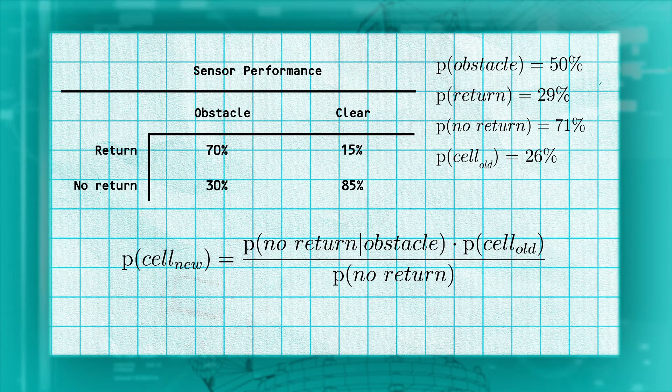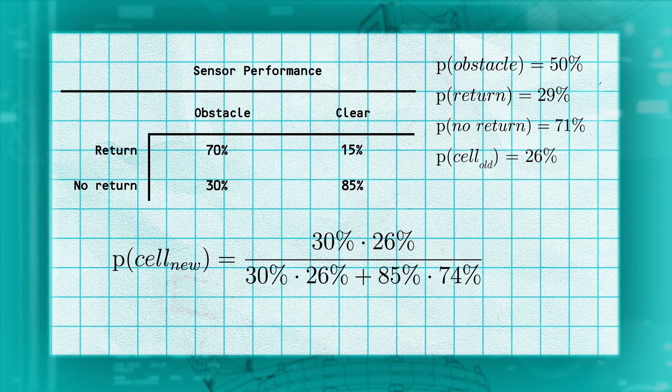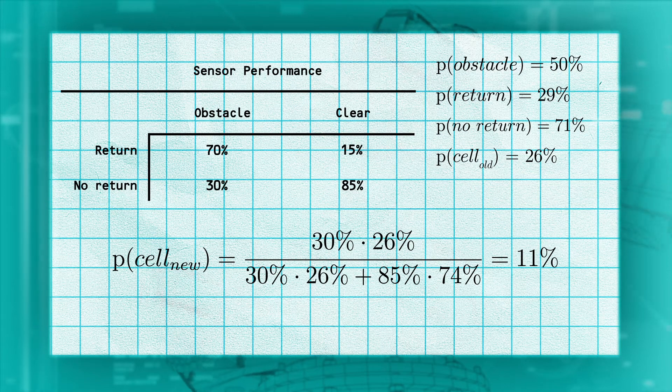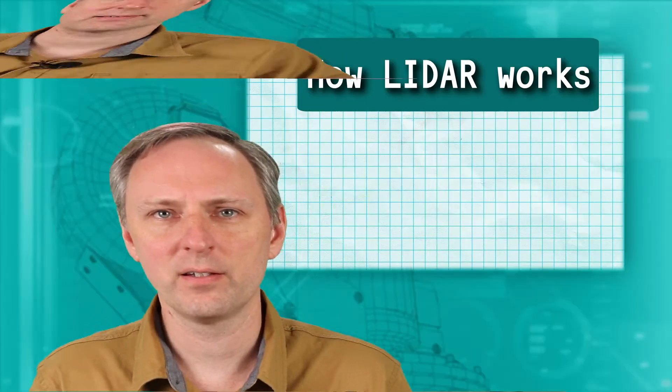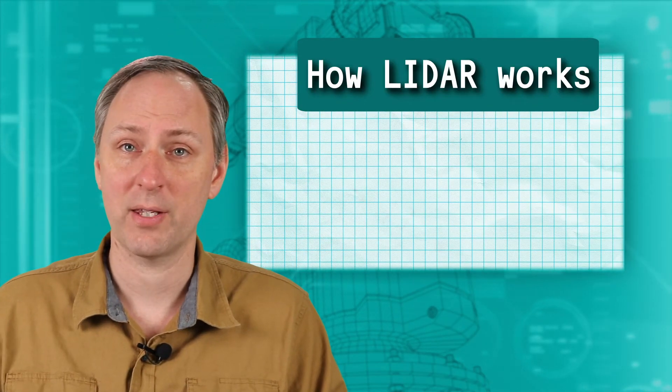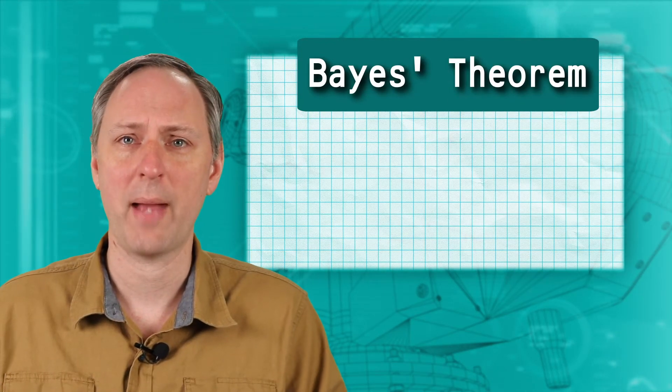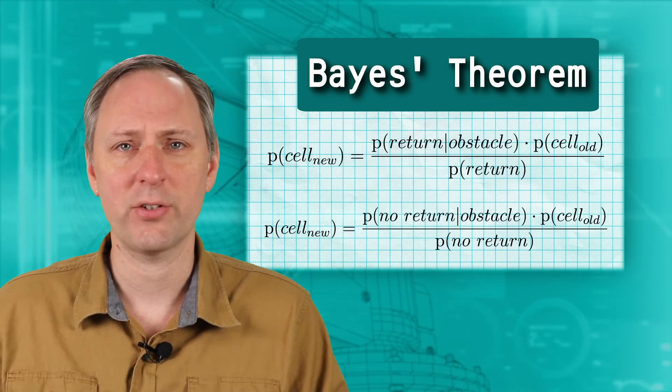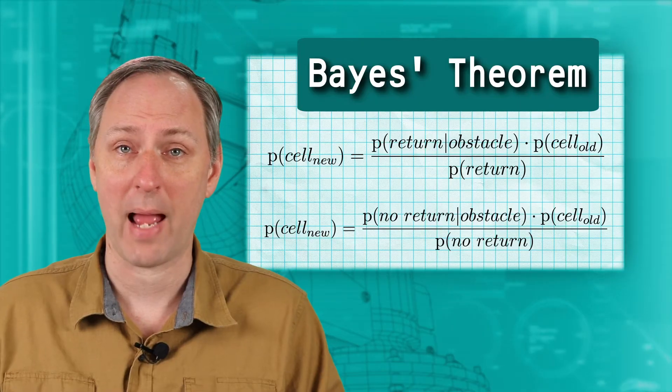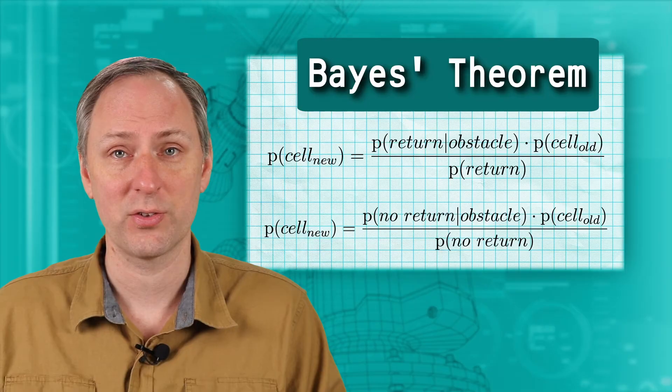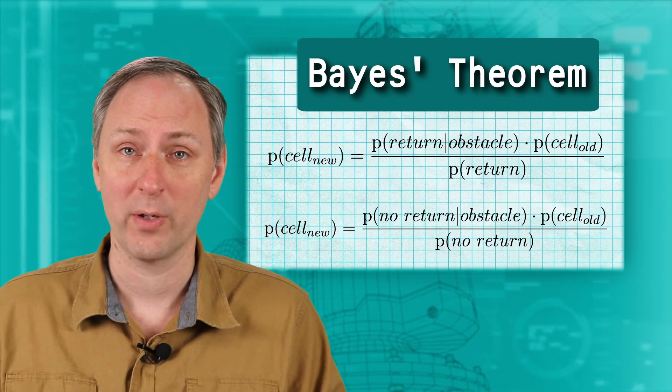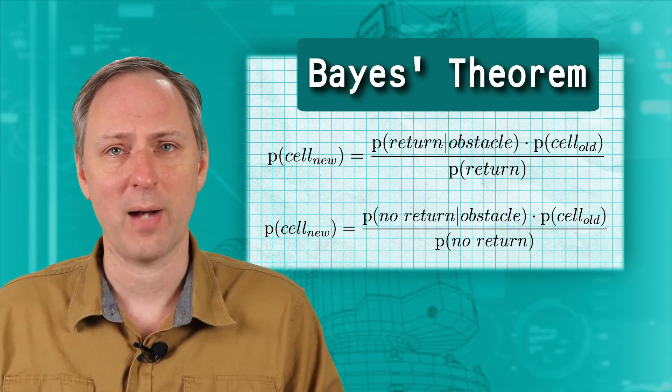In this lesson, we discussed how LIDAR works and what type of measurement it provides. We also discussed a method called Bayes' theorem for storing map data. It allows us to keep track of our certainty that a map cell is occupied. We now have confidence that errors in our measurements won't erase walls that are really there or add phantom obstacles where there aren't any.